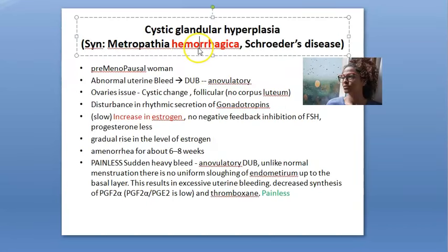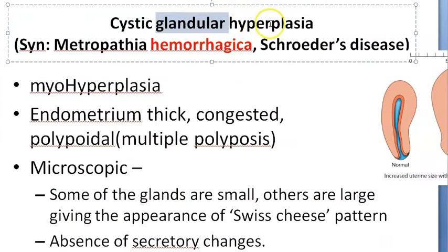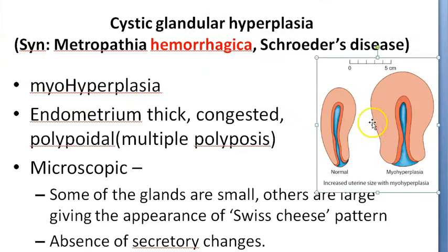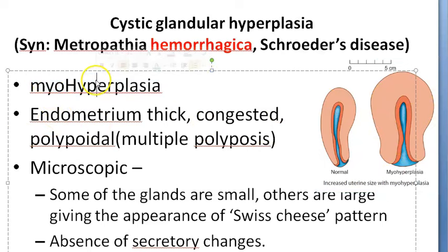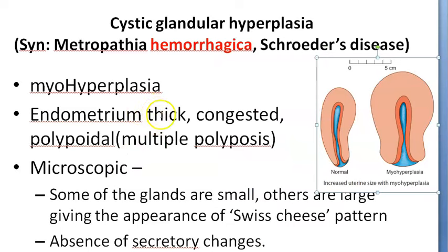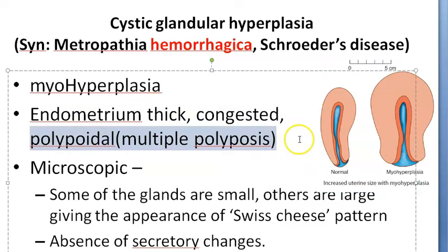Now let's look at the name: Metropathia Haemorrhagica, Schroeder's disease, or Cystic Glandular Hyperplasia. Breaking down 'cystic glandular hyperplasia' — glandular hyperplasia refers to the endometrium growing a lot. There is also myo-hyperplasia — the myometrium (muscle) has also increased, not just the endometrium. The endometrium will be thick, congested, polypoid, with multiple polyps.